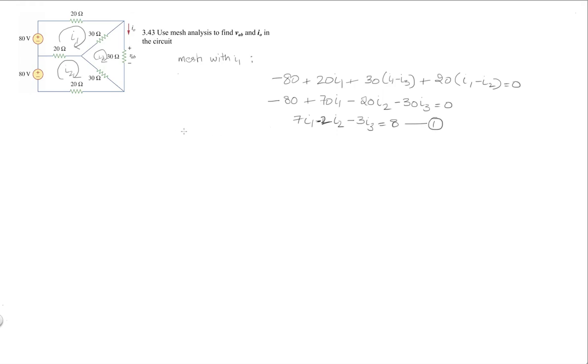So my second equation is the mesh with the I2 mesh current. Let's apply this technique which says minus 80 plus 20 plus 30 plus 20 is again 70I2, and the common elements are this one and this one because they are shared with those two. So that's going to be minus 20I1 minus 30I3.